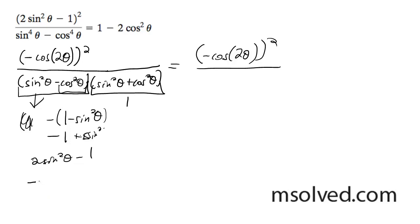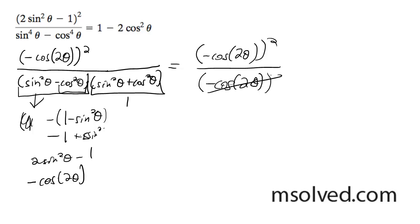Either way, what you're going to end up with inside there is negative cosine 2 theta. I showed that there, so I end up with negative cosine 2 theta. And this turns the squared into just 1, and what happens next is we get negative cosine 2 theta, and we are going to get 1 minus 2 cosine squared theta from this.